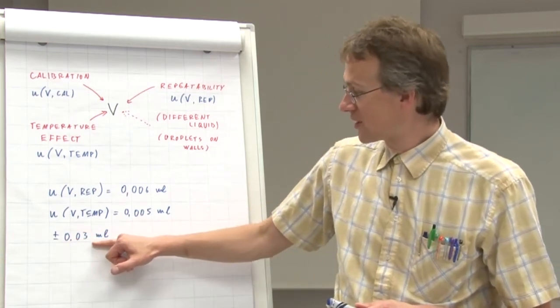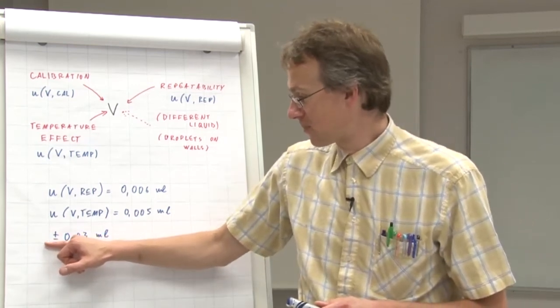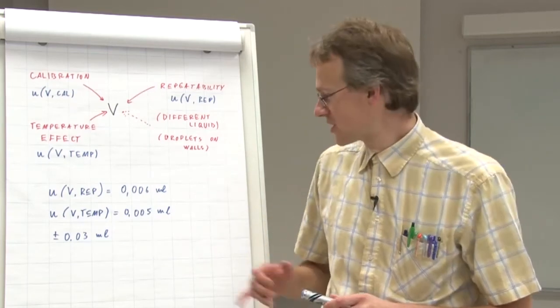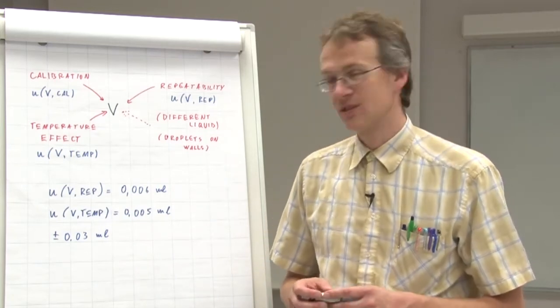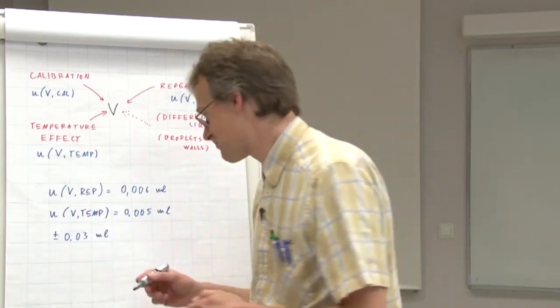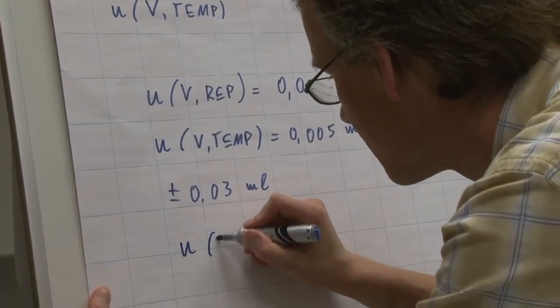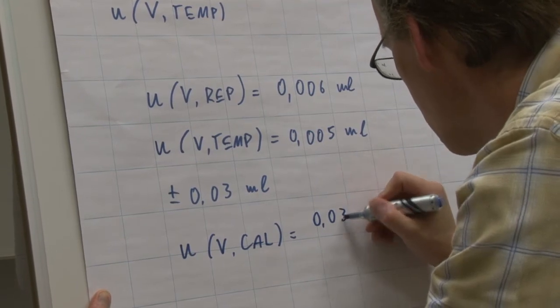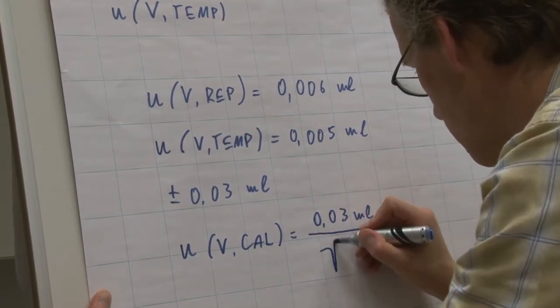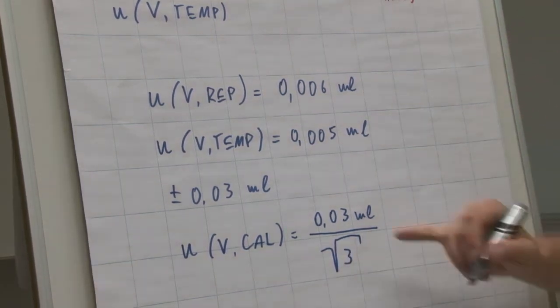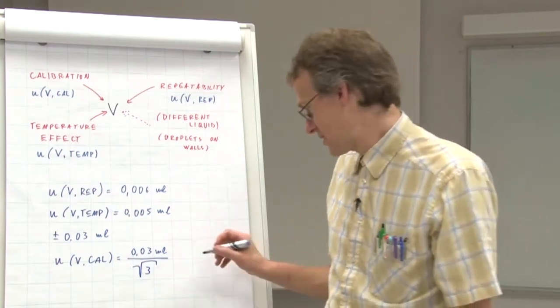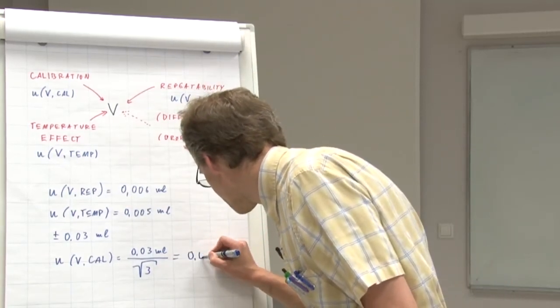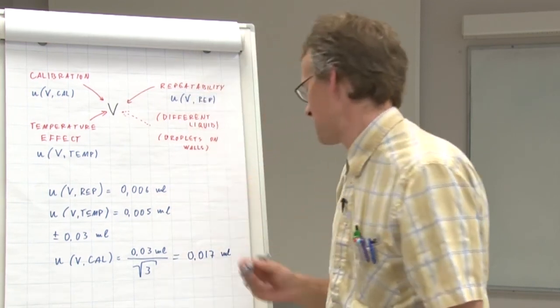Meaning the volume can be anywhere within 10 plus minus 0.03 milliliters. And in order to convert this uncertainty estimate into a standard uncertainty estimate, we divide it by the square root of 3. So 0.03 milliliters divided by square root of 3, which is 0.017 milliliters.